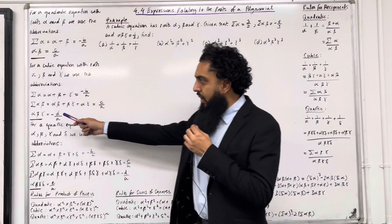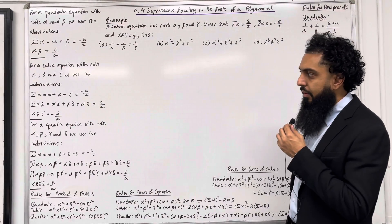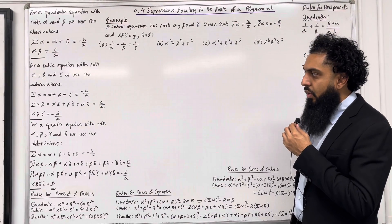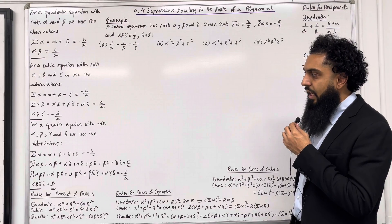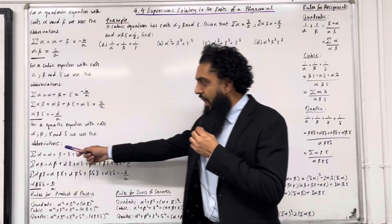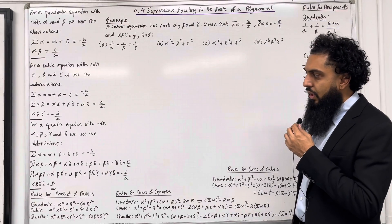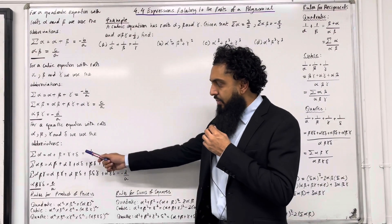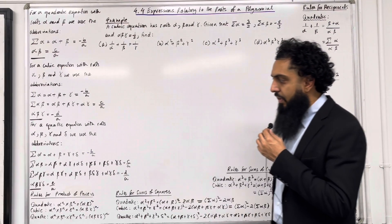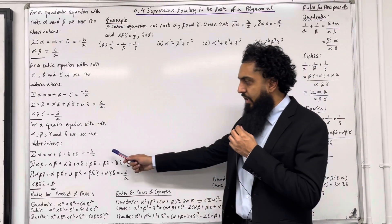Alpha beta gamma is equal to minus d over a. For a quartic equation with roots alpha, beta, gamma and delta we use the abbreviations. Sum of alpha, the sum of the individual roots, is equal to alpha plus beta plus gamma plus delta which is equal to minus b over a.